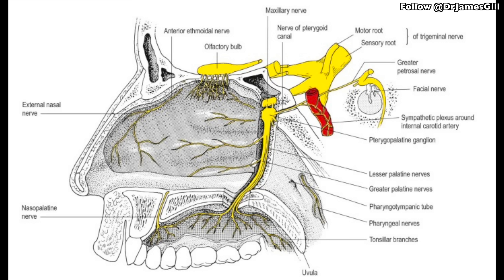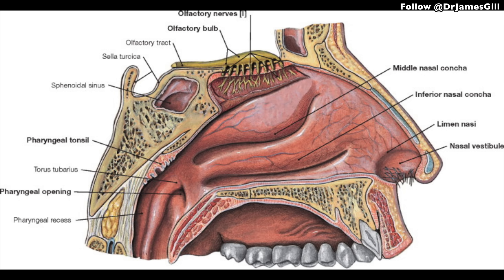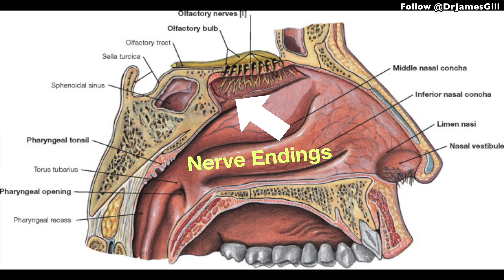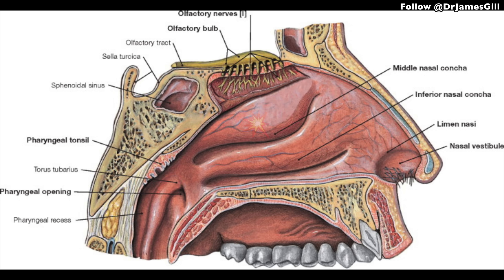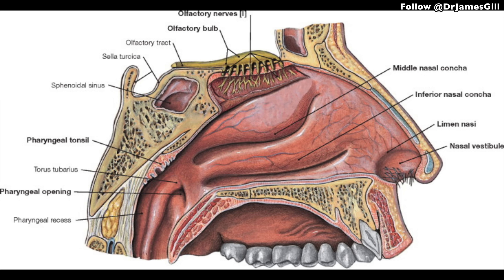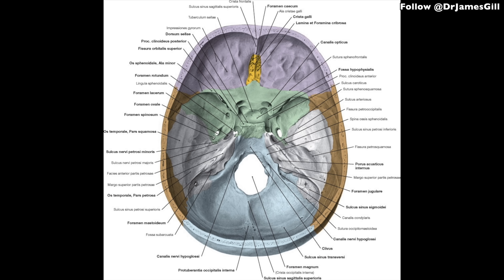Cranial nerve 1, the olfactory nerve, passes through the base of the skull at the cribriform plate, which allows smell signals to travel up into the nostrils and give us the sensation of smell. Because of the delicate finger-like protuberances that pass through the cribriform plate, a severe blow to the head causing the brain to jerk within the skull can rip or sever those fibers, resulting in loss of smell. Similarly, parosmia can occur if a brain tumor is affecting cranial nerve 1, causing abnormal sensations of smell.